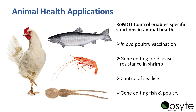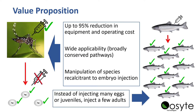Other applications include gene editing for disease resistance in shrimp, control of sea lice which are an important salmon pest, and easy genetic engineering of fish, poultry, and other egg-laying animals. The value proposition is it can reduce up to 95% of equipment and operating costs, has very wide application across just about any egg-laying animal, and allows manipulation of embryos that couldn't be done before.